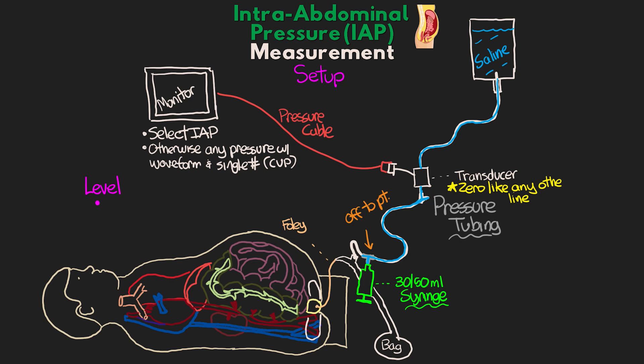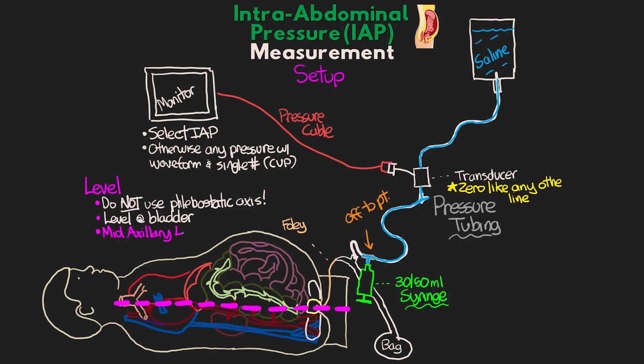Finally, we need to level the transducer. For intra-abdominal pressure, we do not use the phlebostatic axis. Instead, we want the transducer at the level of the bladder. Our landmark for this is the mid-axillary line at the iliac crest, while the patient is lying flat in the supine position. Go to that mid-axillary line, come down to the hip, feel for the iliac crest — that's where we level our transducer, either attaching it there with tape or on the pole.